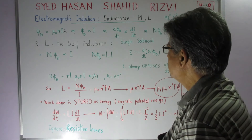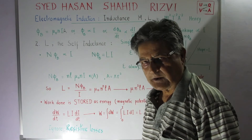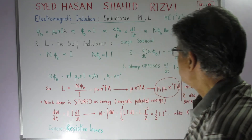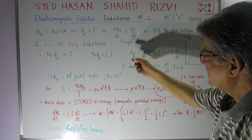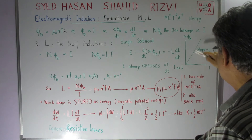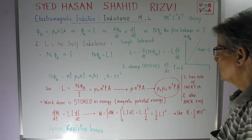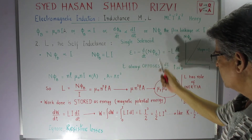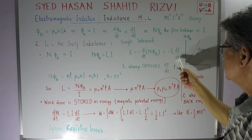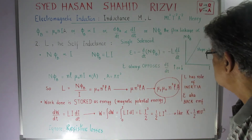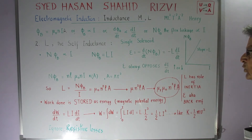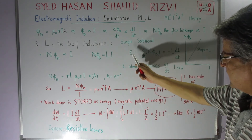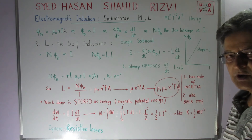For a single solenoid with N turns and length l, Nφ_B is proportional to I. So we define Nφ_B = LI by definition. The slope of the Nφ_B vs. I graph equals L. The EMF developed is, by Faraday's law, E = −d/dt(Nφ_B) = −L·dI/dt. The nature of this EMF is that it always opposes the rate of change of current, whether the current is increasing or decreasing.